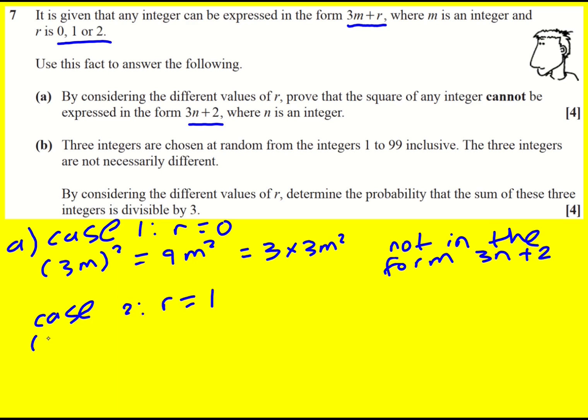Case 2, r is 1, very similar. 3m plus 1 all squared, which will give 9m squared plus 6m plus 1. So 3 times 3m squared plus 2m plus 1. So this is in the form 3m plus 1. Again, not in, I'm not going to write that again, I'm just going to draw some arrows.